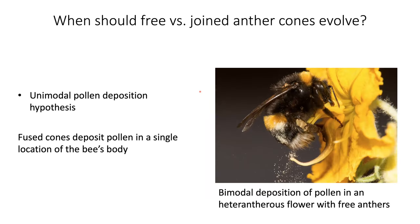A second hypothesis for the evolution of joint anthers is that they improve unimodal deposition of pollen on the pollinator's body. By bringing all anthers together and aligning all pores in the same location, when pollen is released upon vibration it lands on more or less one region of the body. This unimodal pollen deposition contrasts with species having two types of anthers that deposit pollen into different parts of the body — for example, short feeding anthers depositing pollen on the ventral side of the bee and a longer anther depositing on the dorsal abdomen.